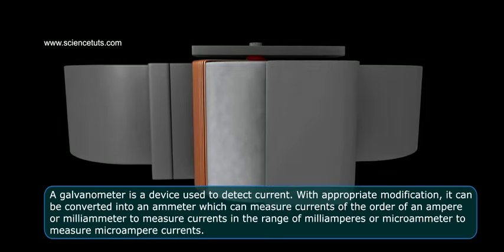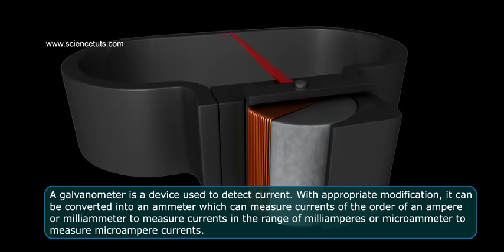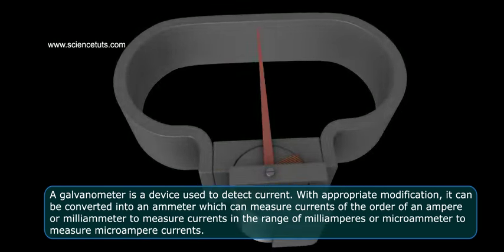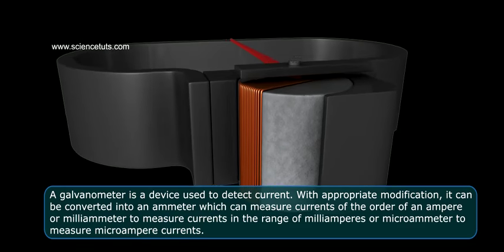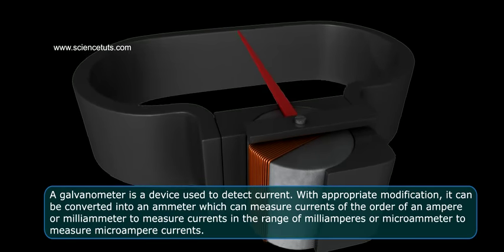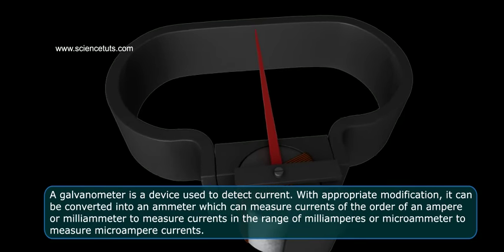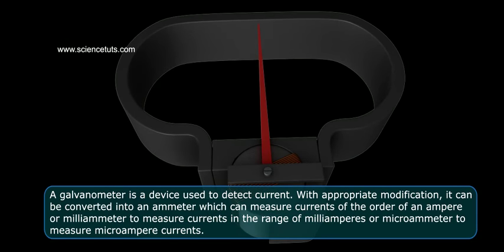Galvanometer. A galvanometer is a device used to detect current. With appropriate modification, it can be converted into an ammeter which can measure currents of the order of an ampere or milliammeter to measure currents in the range of milliamperes or microammeter to measure microampere currents.